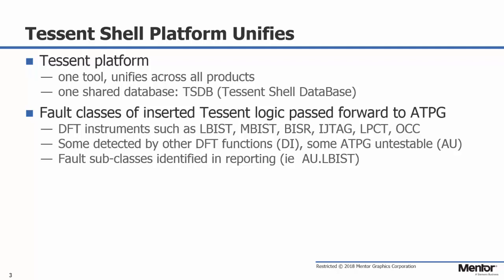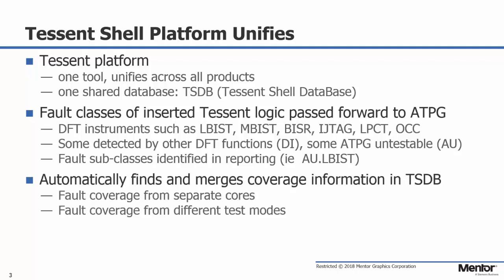Some faults might be ATPG Untestable, or AU, instead. In that case, Tessin provides a more detailed subclass pointing to the reason why the fault is AU — for example it might appear as AU.LBIST to indicate it's related to LBIST logic not tested by ATPG. In the case of hierarchical designs that produce many coverage reports from different cores and test modes, Tessin knows where in the TSDB those coverage results are stored and merges them into a single coverage number for the entire SoC.